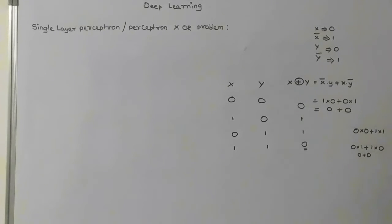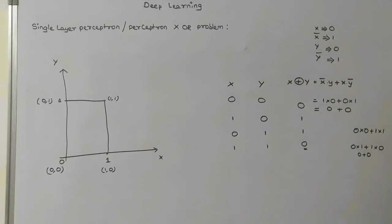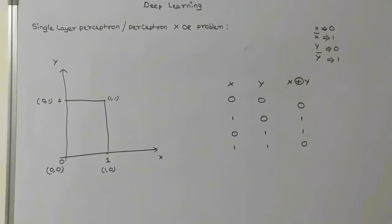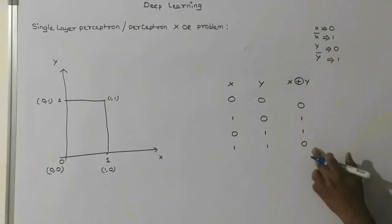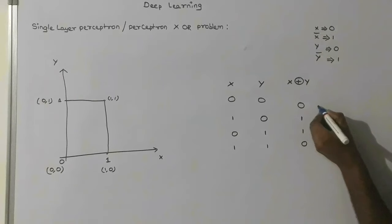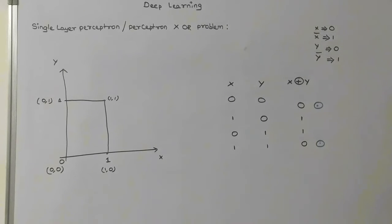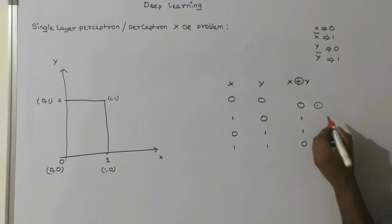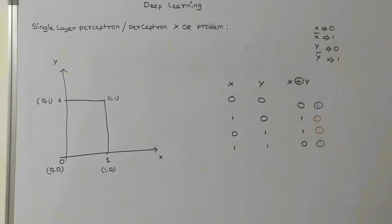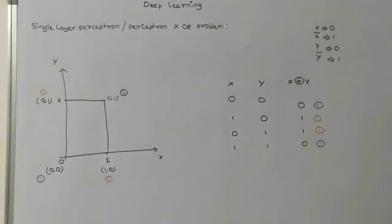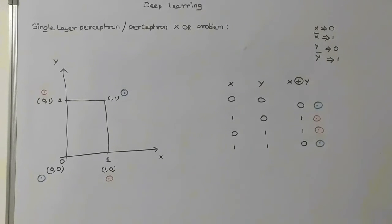Now let us see the graphical representation. I have represented the whole XOR problem graphically. We categorize the values based on the results: results of 0 are shown as blue dots, and results of 1 are shown as red dots. We have placed these dots in our graphical representation showing the different colors based on the results.